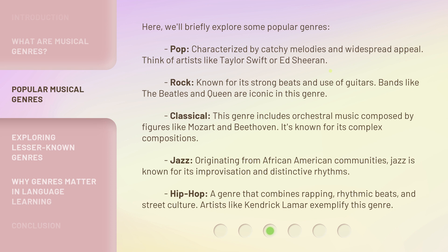Classical — this genre includes orchestral music composed by figures like Mozart and Beethoven. It's known for its complex compositions. Jazz — originating from African American communities, jazz is known for its improvisation and distinctive rhythms. Hip-hop — a genre that combines rapping, rhythmic beats, and street culture. Artists like Kendrick Lamar exemplify this genre.